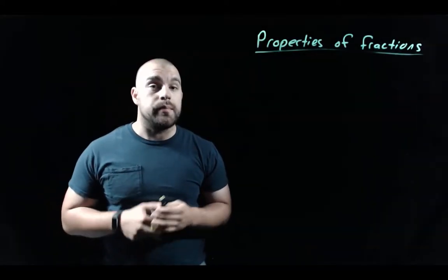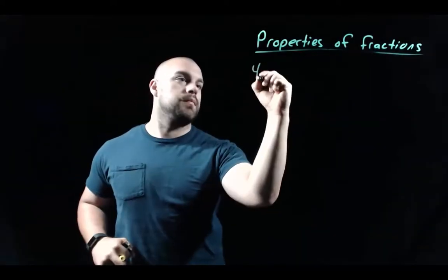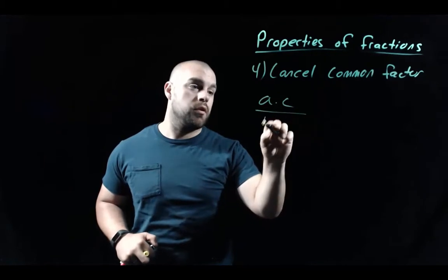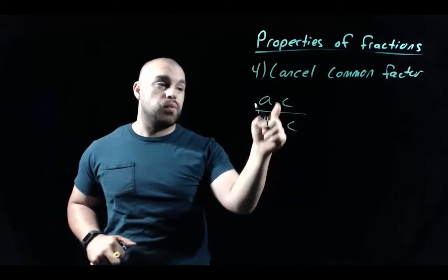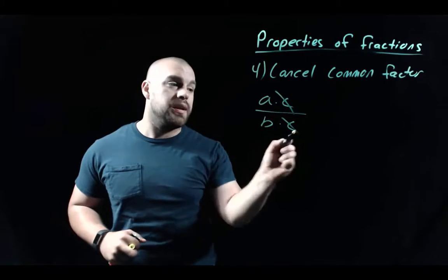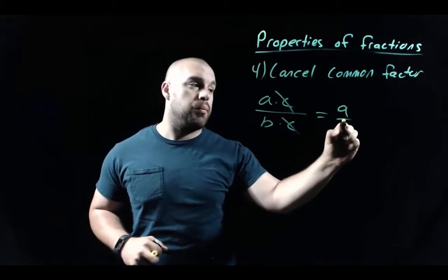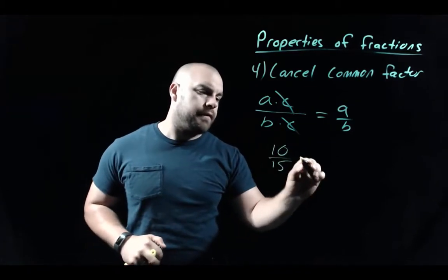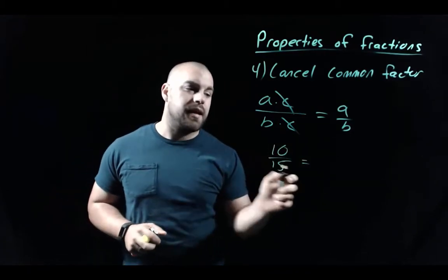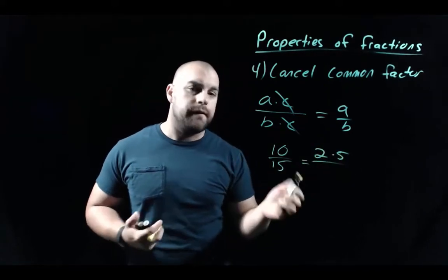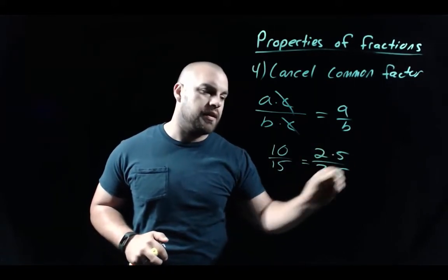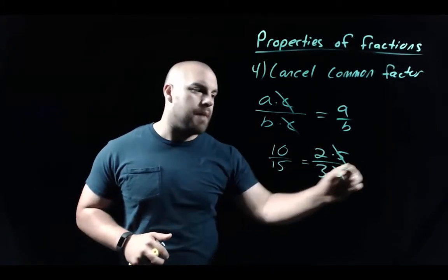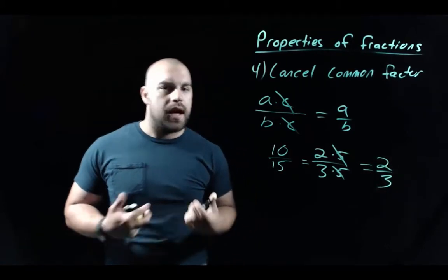Our next property of fractions is canceling a common factor. If we had a fraction of a times c over b times c, since we're multiplying by c on top and on bottom, we can cancel that out and get just a over b. For example, 10 over 15 — splitting into 2 times 5 over 3 times 5 — we cancel the common factor of 5 and get 2-thirds.